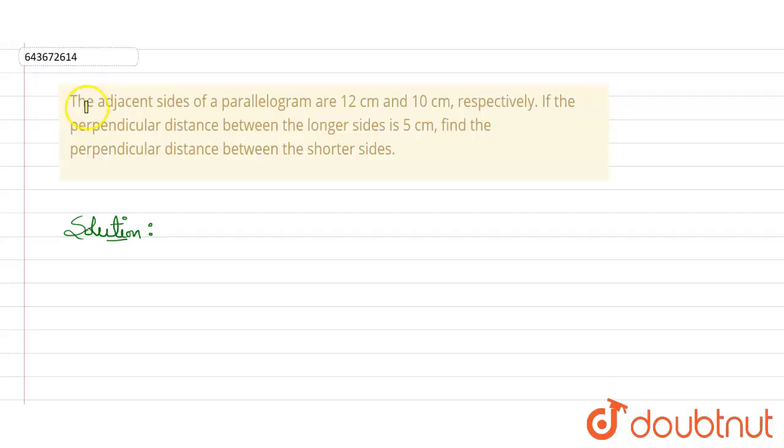Hello everyone, in this question it is given that the adjacent sides of a parallelogram are 12 cm and 10 cm respectively. If the perpendicular distance between the longer sides is 5 cm, then we have to find the perpendicular distance between the shorter sides.